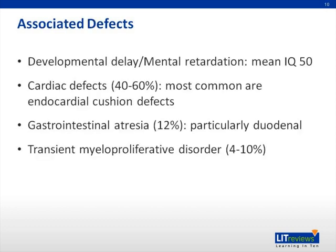There are multiple conditions associated with Down syndrome. The vast majority of patients have developmental delay and intellectual disability, with an average IQ of 50. Cardiac defects, most commonly endocardial cushion defects, are present in 40% to 60% of patients. Gastrointestinal atresias are present in 12% of patients, with duodenal atresia being the most common. Approximately 4% to 10% of patients have a transient myeloproliferative disorder shortly after birth, usually manifested as blasts in the peripheral blood, which typically improves over the first three months of life without intervention.